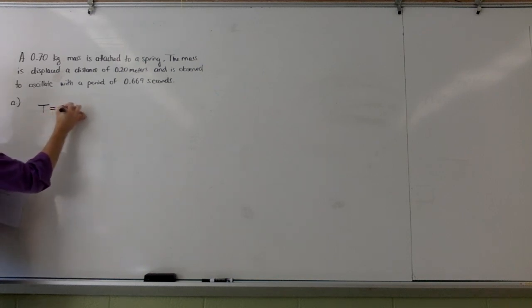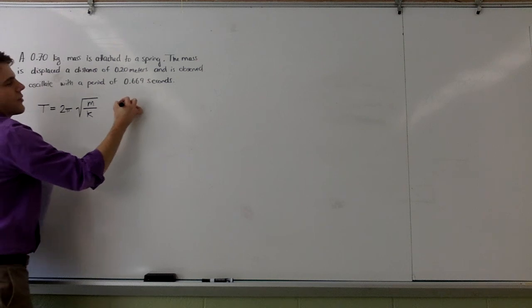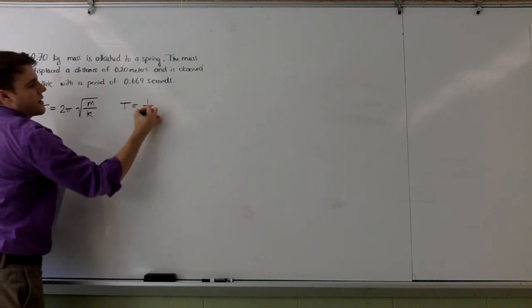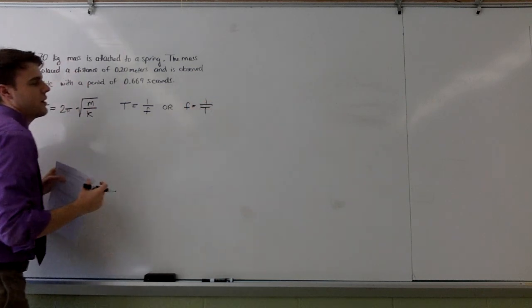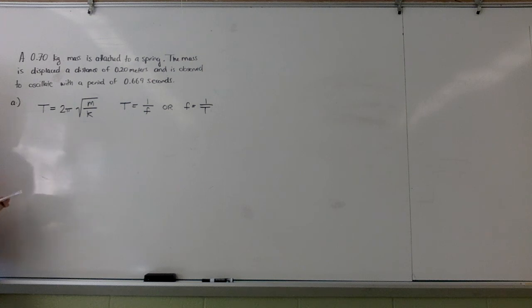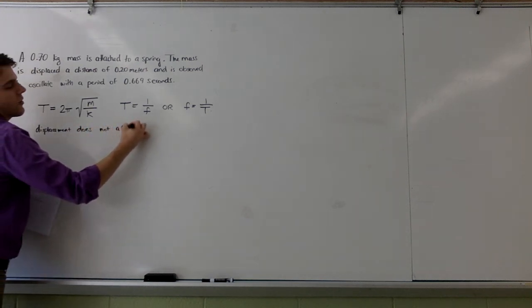If I recall my equations for mass on a spring, I know that the period can be calculated as 2 pi times the square root of the mass over the spring constant. And I can also recall that period is the inverse of frequency. So whatever affects period affects frequency. Now in this equation, all that I have affecting period or frequency is mass and spring constant. Displacement does not show up. That means that displacement does not affect period or frequency.